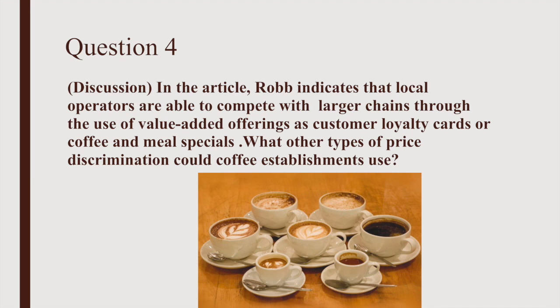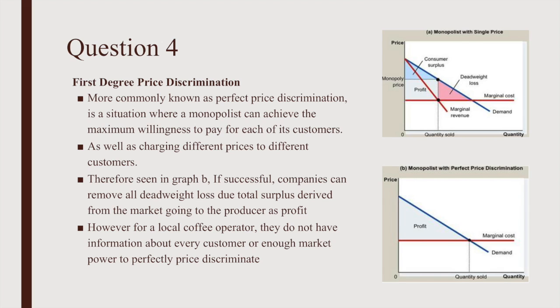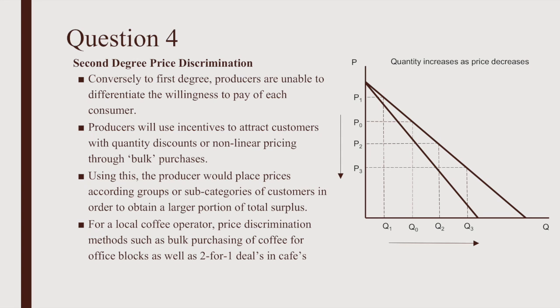Question 4: What other types of price discrimination could coffee establishments use? First degree price discrimination, also known as perfect price discrimination, is a situation where a monopolist can charge the maximum willingness to pay for each customer, charging different prices to different customers. As seen in graph B, if successful, companies can remove all deadweight loss as total surplus goes to the producer as profit. However, for a local coffee operator, they do not have information about every customer or enough market power to perfectly discriminate.